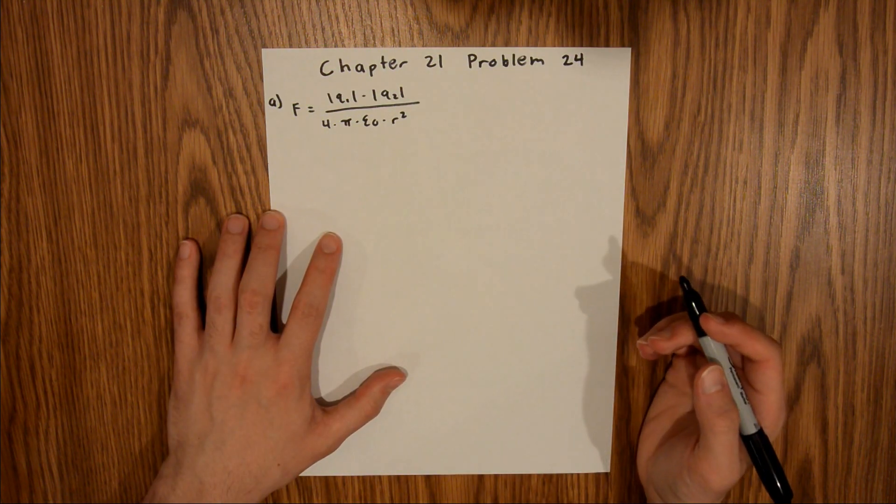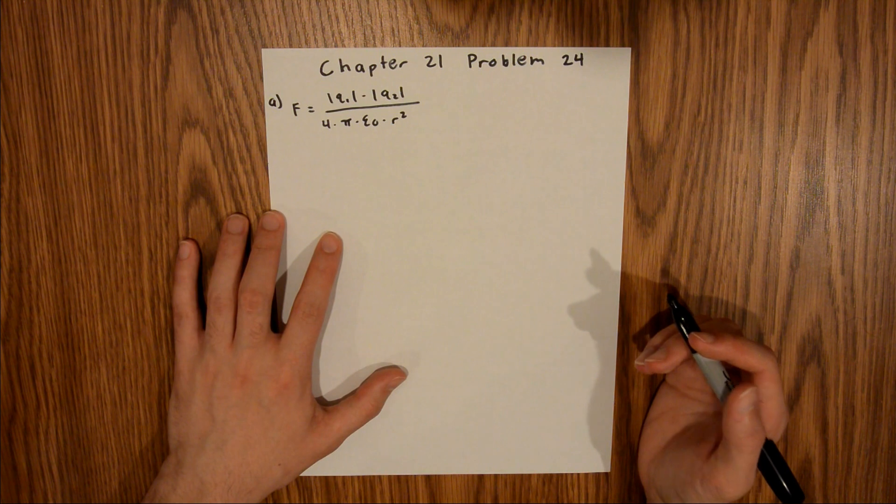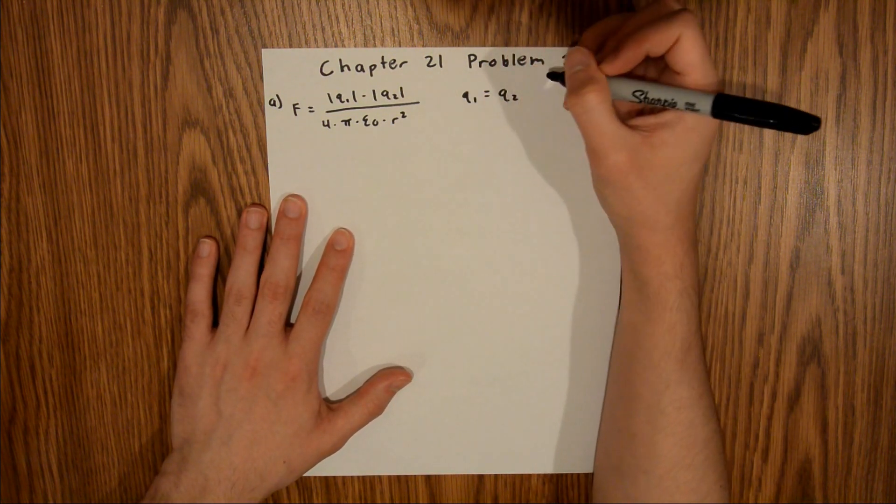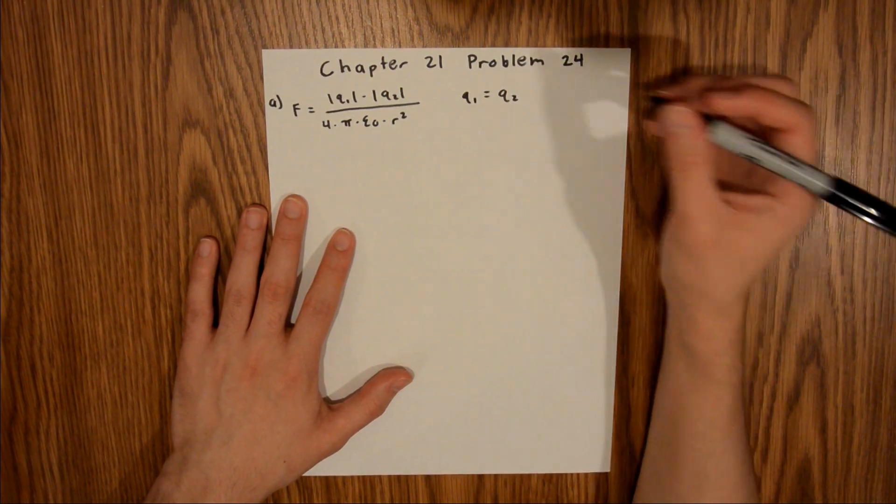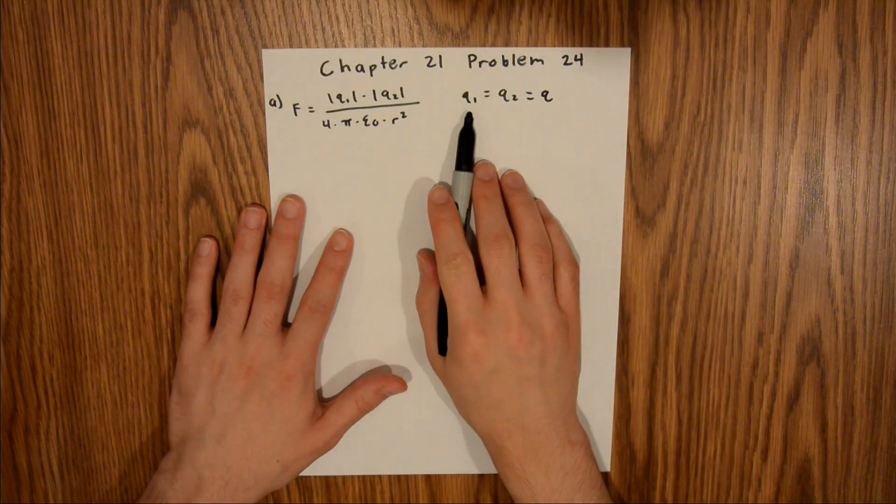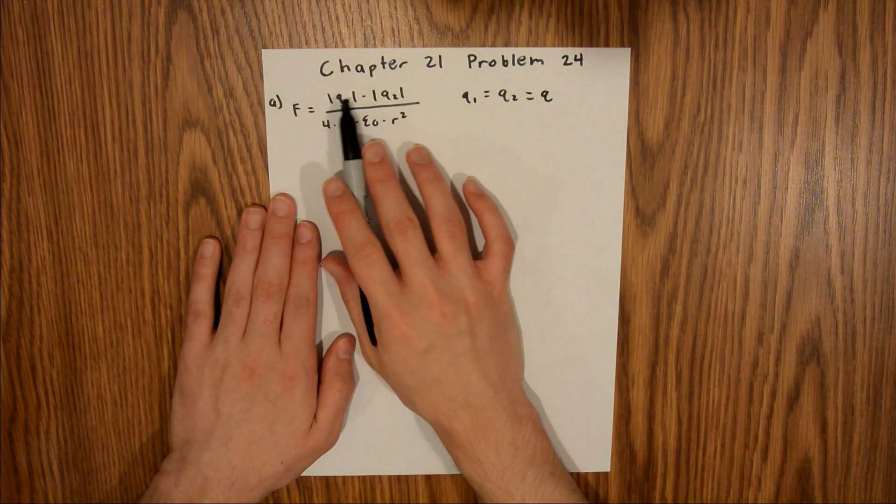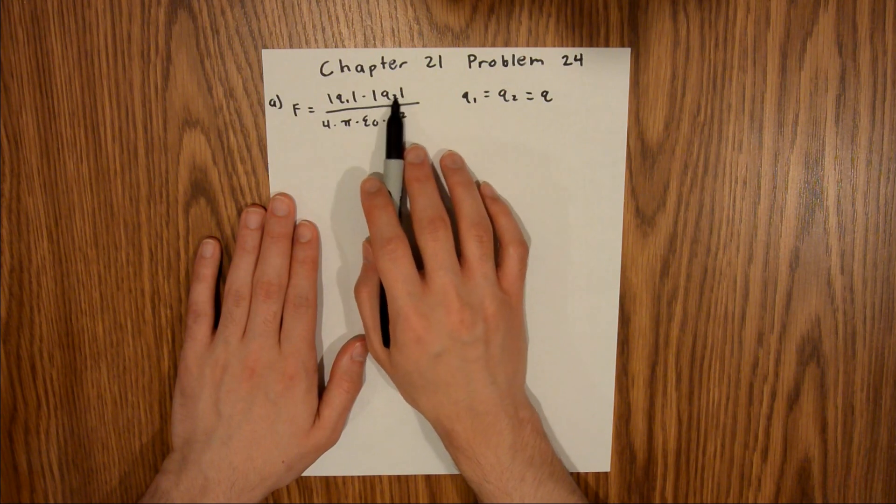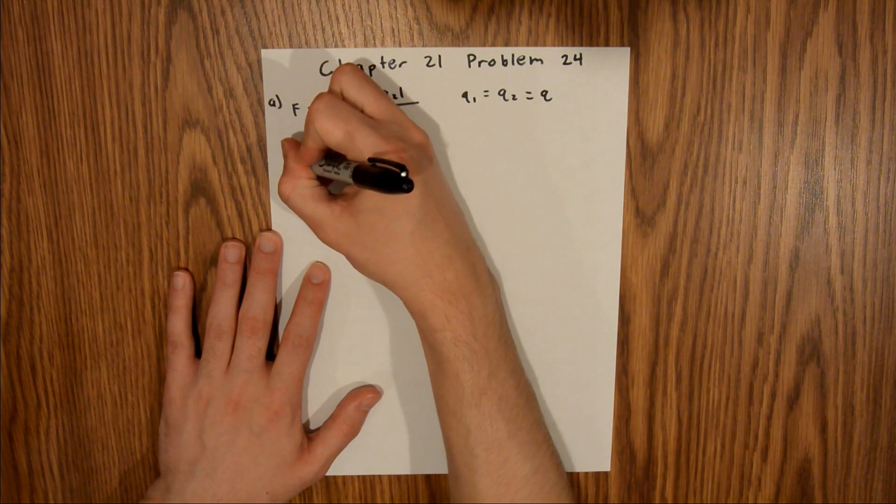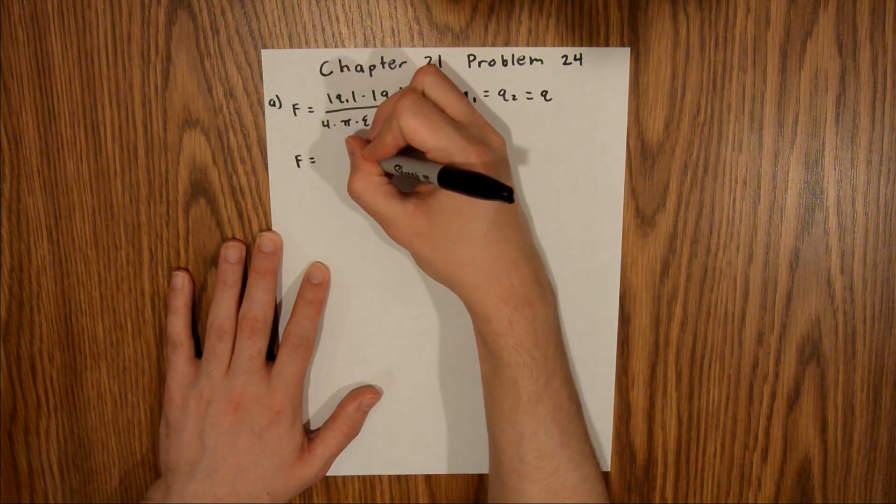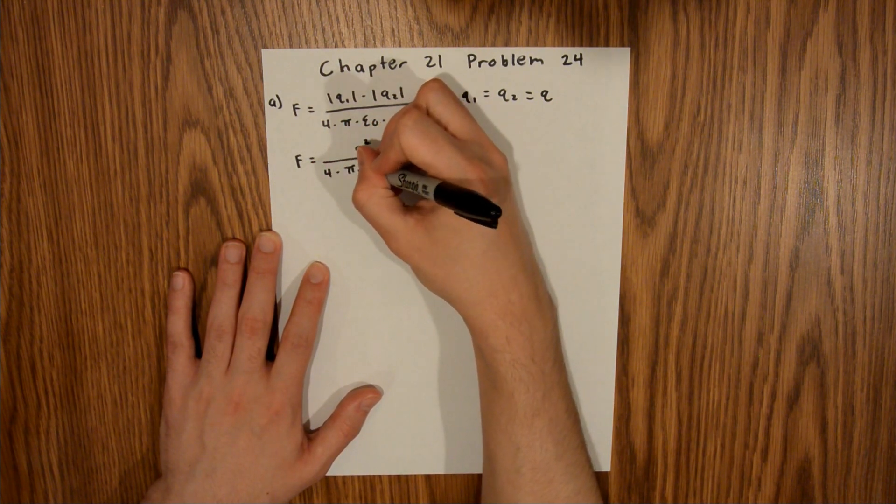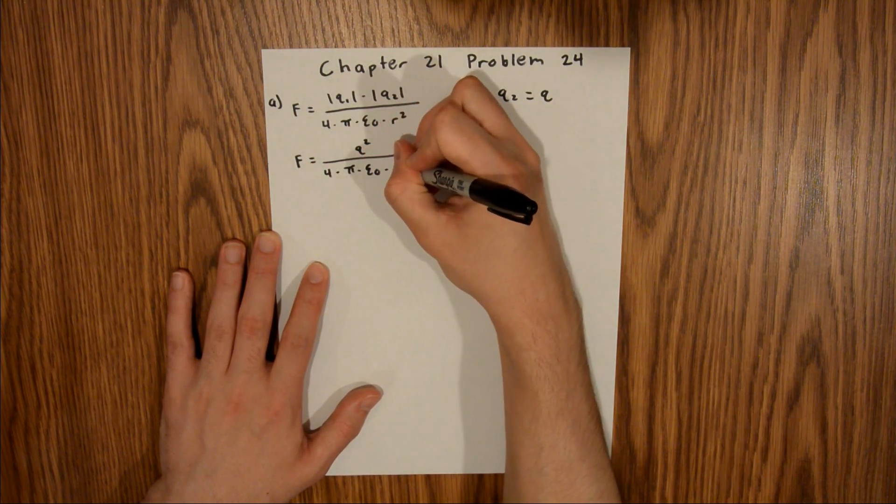Now in this case we are told that the charge on both water droplets is identical, meaning that Q1 is equal to Q2. So for simplicity I'm going to drop the subscript and just say that the charge is Q. If Q1 equals Q2, that means the absolute value of Q1 equals the absolute value of Q2, so I can rewrite this numerator as Q squared.